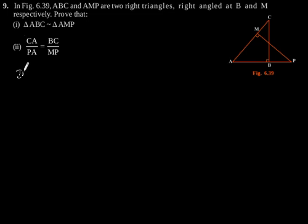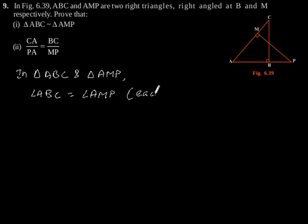So here, considering triangle ABC and triangle AMP, angle ABC is equal to angle AMP since both are 90 degrees, and angle A is equal to angle A since it's a common angle.